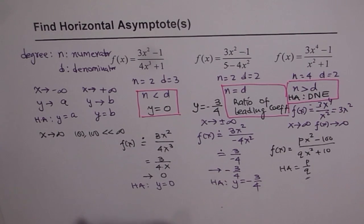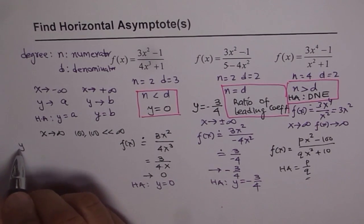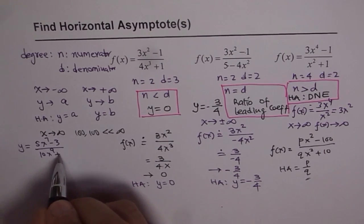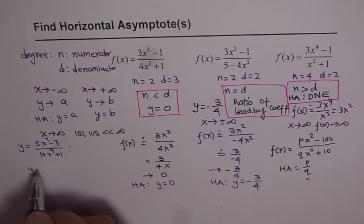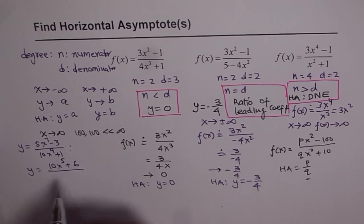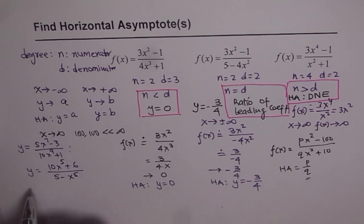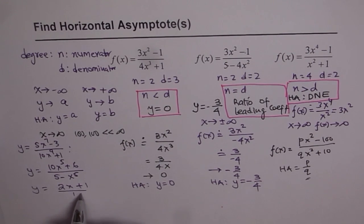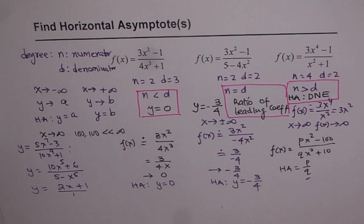As an exercise, here are some questions to try: First, y equals 5x to the power of 7 minus 3, over 10x to the power of 9 plus 1. Second, y equals 10x to the power of 5 plus 6, over 5 minus x to the power of 5. Third, y equals 2x plus 1. This last one is tricky — the degree of the numerator is higher, and you can take the denominator as 1, like x to the power of 0. In the next video, we'll see whether a graph of a function can cross a horizontal asymptote or not.